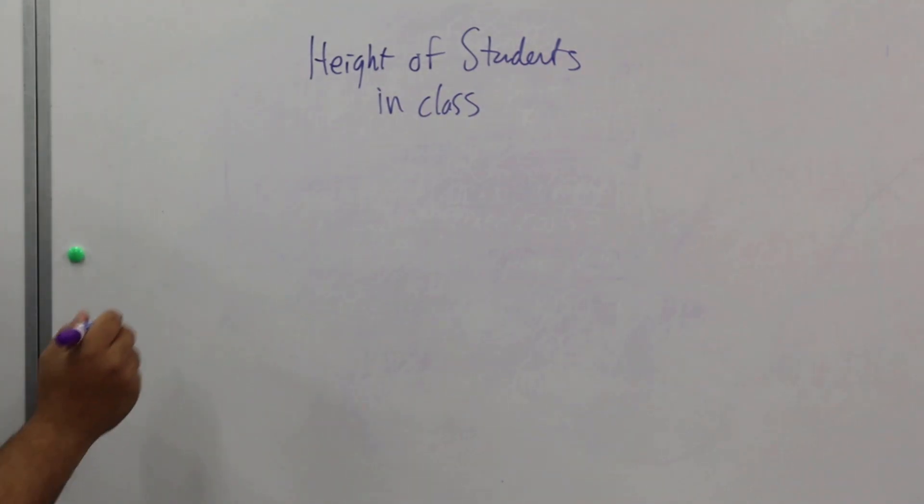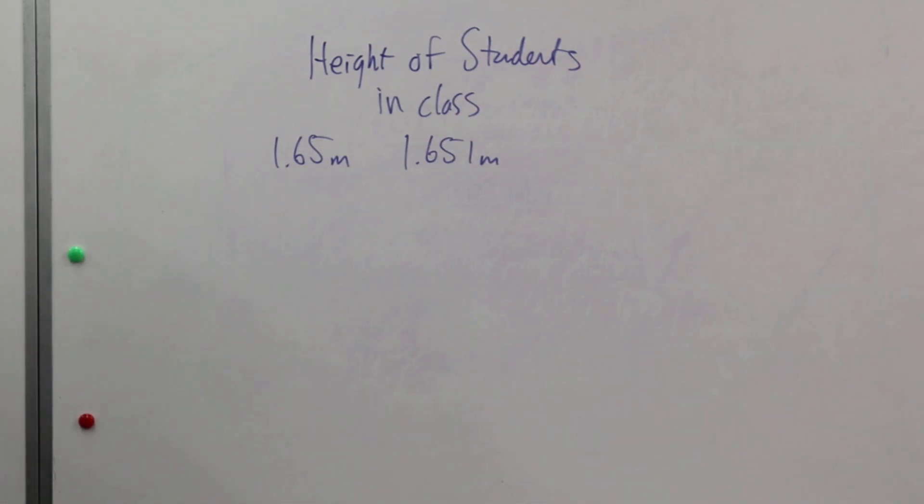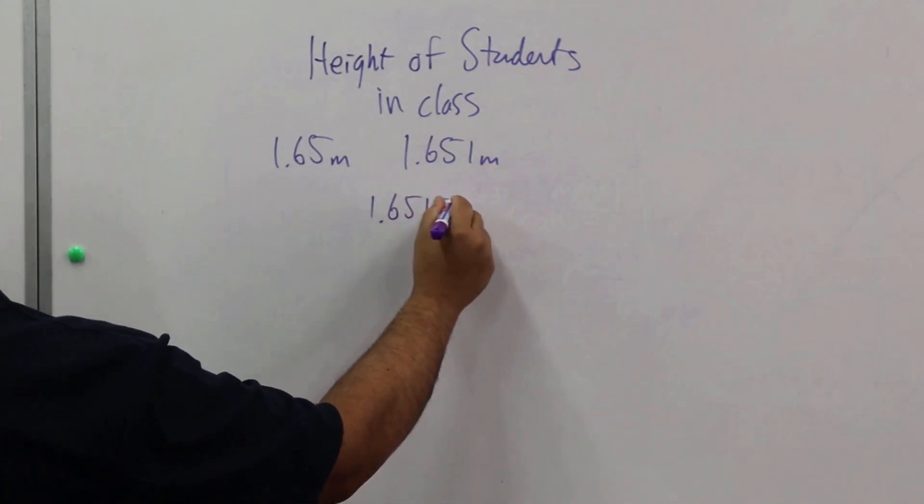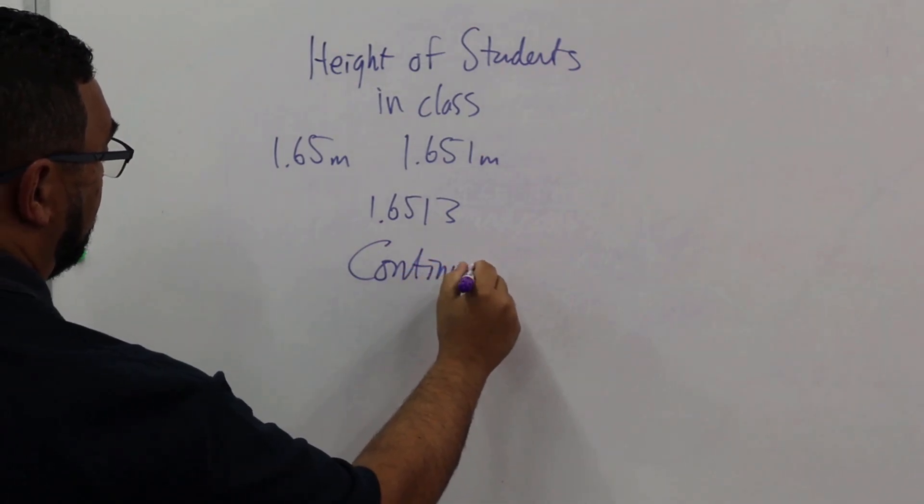Can someone be exactly 1.65 meters tall? Yes, but what about 1.651 meters tall, or maybe 1.6512 meters tall? The height keeps getting more precise. So what is this based on what we've said, continuous data or discrete data? Remember what we said: continuous data can take any value within a range, whereas discrete data are whole separate values. So what do you think this is? This is continuous.